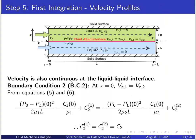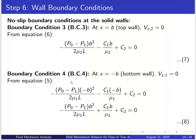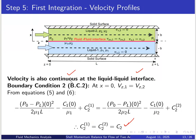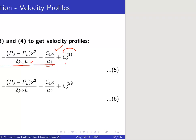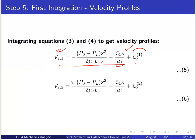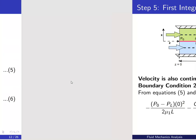Velocity is also continuous at the liquid-liquid interface, so Vz1 equals Vz2 at x equals 0, giving C2_1 equals C2_2 equals C2. Applying the no-slip boundary condition at the solid walls: boundary condition 3 is Vz2 equals 0 at x equals B (top wall). Substituting gives minus[(P0 minus PL)·B²/(2 mu2 L)] minus (C1·B/mu2) plus C2 equals 0, which is one equation.